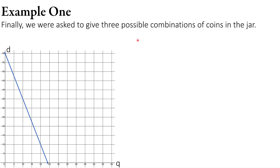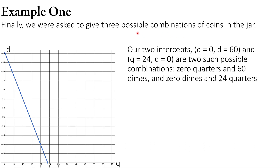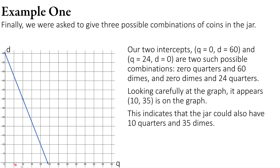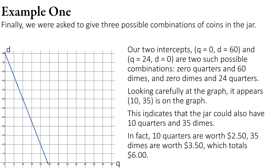We were asked for three possible combinations. We already have two: q = 0, d = 60, and q = 24, d = 0. We need one more. Looking at the line for a point that's easy to spot, one possible point is (10, 35) — that would correspond to 10 quarters and 35 dimes. And indeed, 10 quarters are worth $2.50, 35 dimes are worth $3.50, and that totals $6. So that's a legitimate third combination.